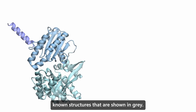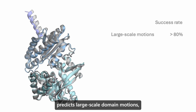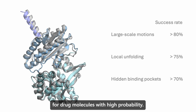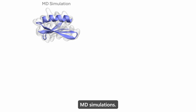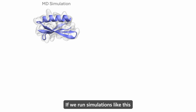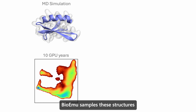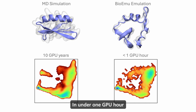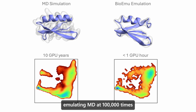Here you see an interpolation of BioEMU samples for a receptor domain between two experimentally known structures shown in gray. BioEMU predicts large-scale domain motions, local unfolding transitions, and the formation of hidden binding pockets for drug molecules with high probability. BioEMU also emulates the results of millisecond-scale MD simulations. If we run such simulations for several GPU years, we can compute an energy landscape — a map of protein structures where the blue valleys contain high-probability structures. BioEMU samples these structures extremely quickly: in under one GPU hour, we can compute an ensemble generating a very similar energy landscape, emulating MD at a 100,000-times speedup.